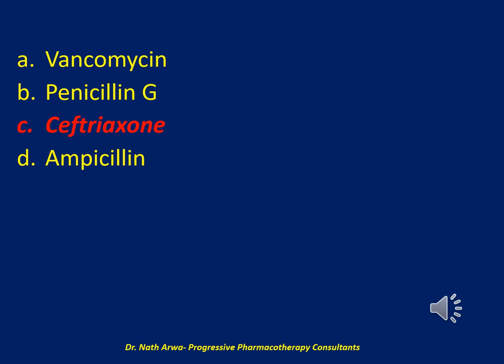The correct answer is C. Ceftriaxone. This patient has not been immunized against Haemophilus influenzae type B or Streptococcus pneumoniae, the most common bacterial pathogens in unvaccinated children with CAP. Ampicillin does not provide coverage for penicillin-resistant Streptococcus pneumoniae. Ceftriaxone provides coverage against Haemophilus influenzae and Streptococcus pneumoniae, the most common bacterial pathogens in unvaccinated children with CAP. Ceftriaxone also provides coverage for penicillin-resistant Streptococcus pneumoniae, which represents a large proportion of local isolates.